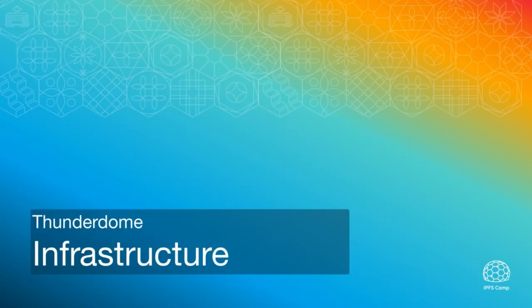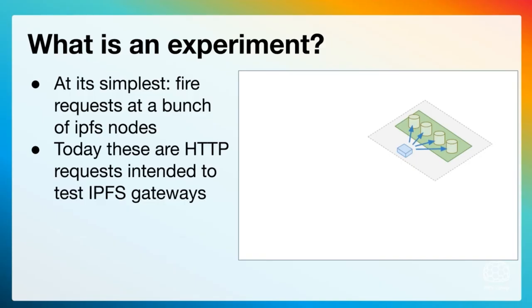At its simplest, an experiment is simply a bunch of containers which contain IPFS instances and we fire traffic at them. Today those are HTTP requests because we're trying to test the performance of IPFS gateways, but in the future that could be other kinds of load — such as bitswap requests or a different kind of request for a different protocol or a different kind of software under test.